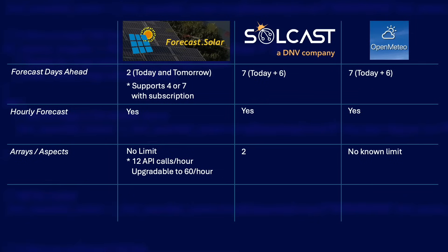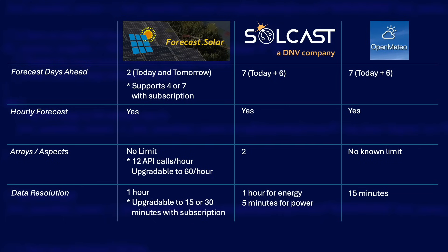Open Meteo, as far as I can tell, has no array limit — you just create multiple instances of the integration, one for each aspect. When you create multiple instances, which applies to all three integrations, you get separate energy and power sensors for each instance, meaning you'll need to add the sensors together to get the total forecast for your whole PV installation, which makes it a bit trickier to manage. In terms of data resolution: Forecast.Solar gives one-hour resolution. Solcast also gives hourly but additionally provides forecasted power generation down to five-minute averages. Open Meteo gives forecasted energy generation for 15-minute periods. Note that Forecast.Solar can also provide 15-minute resolution under a subscription option.